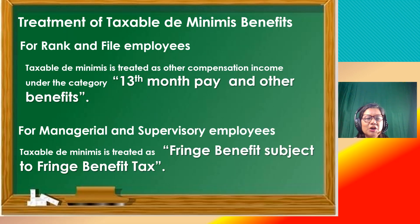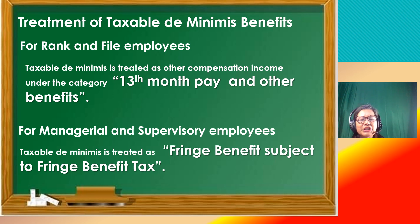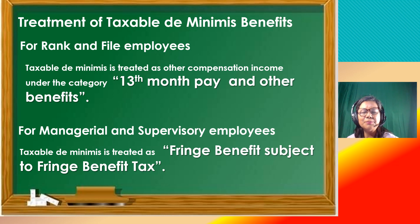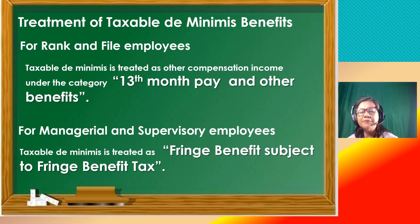We have two categories: rank and file employees and managerial and supervisory employees. Rank and file employees are those from the lower level, while managerial and supervisory employees are the top officials. For taxable de minimis, those for rank and file employees are treated as other compensation income under the category of 13th month pay and other benefits. For managerial and supervisory employees, taxable de minimis benefits are treated as fringe benefits and are subject to fringe benefit tax.